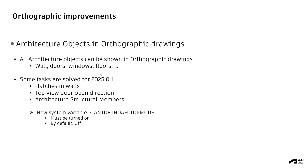Another autographic improvement in 2025 is that all architecture objects can be shown in autographic drawings, like walls, doors, windows, or floors. Note that for some objects you have to additionally install the AutoCAD PLAN3D update 2025.0.1. These include effects, hatches and walls, top view door open direction, and architecture structural members.